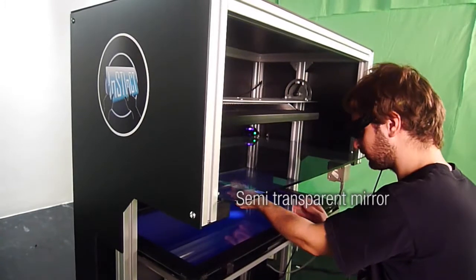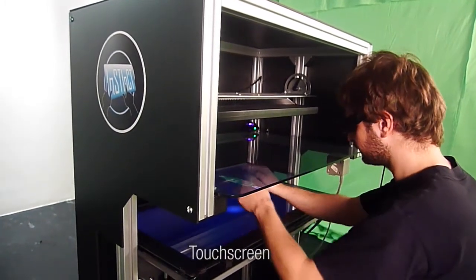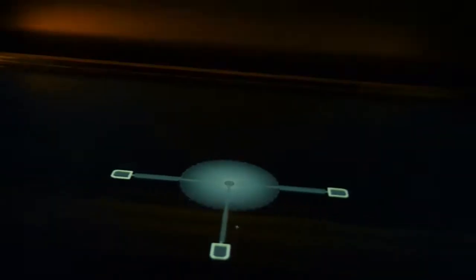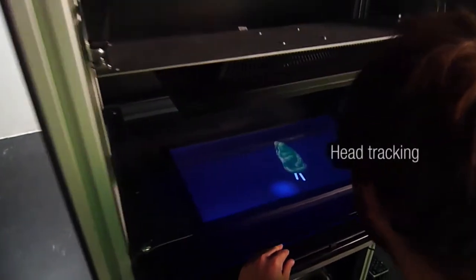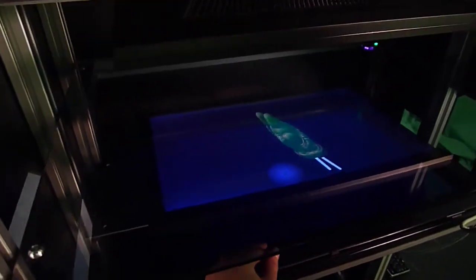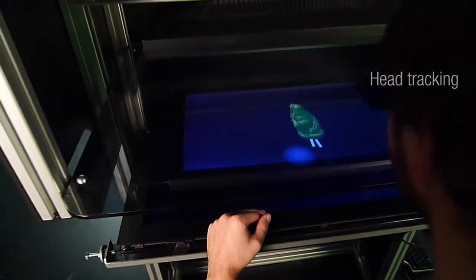Hence, the user perceives the stereoscopic content as if it were displayed between the touchscreen and the mirror. We map the stereoscopic virtual environment with the physical touchscreen so that the two displays are merged within a uniform visualization space.